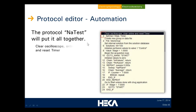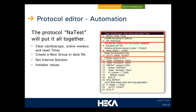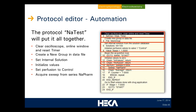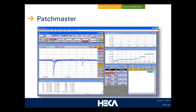The next protocol performs the averaging — a running average of five sweeps. We acquire a sweep, calculate the peak current, then go to the next sweep and do so for five sweeps. We compute an average, compare it to the next sweep, and specify that if the average change is above 0.5% we stop and consider steady state, then go on to the next part. Putting this whole thing together in the main protocol: we clear the oscilloscope, online window, and reset timers; create a new program group in the data file; set the internal solution and perfusion valve; initialize values; call perfusion control; then go into a repeat loop acquiring a single sweep at a time, performing averaging, checking for steady state, and repeating until completed.